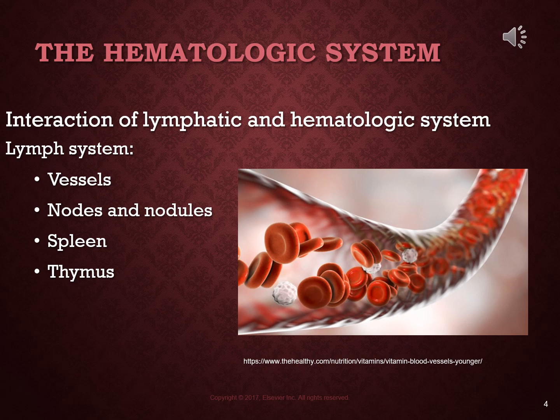Fluid enters through the lymph capillaries, which are single-celled tubes that allow for the movement of fluid and other substances. Below the diaphragm, the left thoracic duct drains into the left subclavian vein, and on the right side, the right subclavian vein — these are places where the lymphatic system returns fluid to circulation.